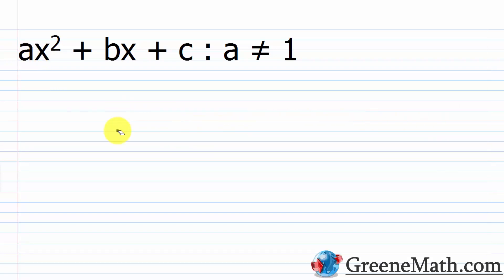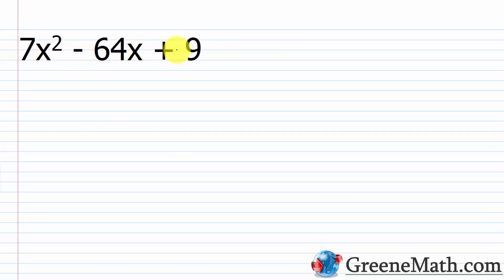When we get to the more challenging scenario where a is not equal to 1, something like 7x² - 64x + 9, we learned in the last lesson that we could factor this using the AC method, or what many people call the grouping method. Normally we use factoring by grouping with a four-term polynomial, and with this method we rewrite the trinomial as a four-term polynomial so we can use grouping. Let's quickly review that, then jump into reverse FOIL.